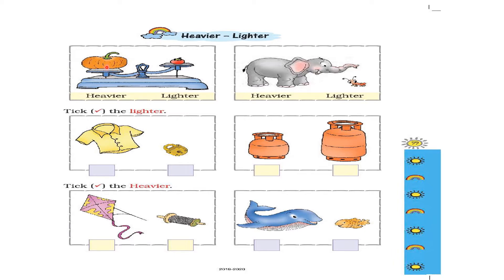In this picture we are going to compare a pumpkin with a tomato — the pumpkin is heavier than the tomato. In the next picture, this huge elephant is heavier when you compare it with this tiny ant.